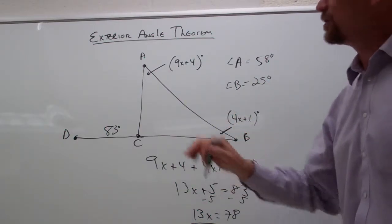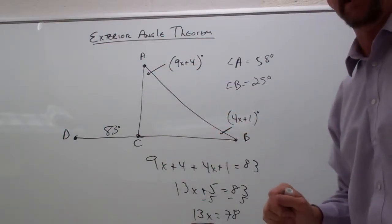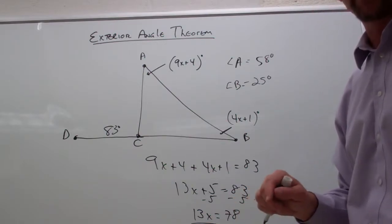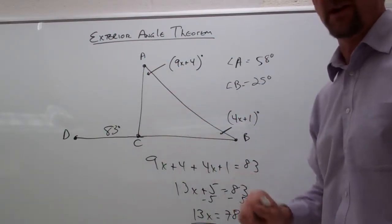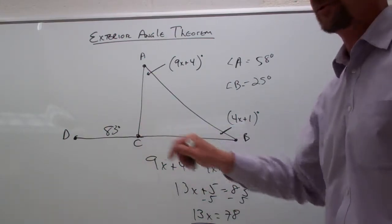So now we've used the exterior angle theorem to find the measures of angle A and angle B. And if we want to take it one step further, we can use the triangle sum theorem, which states that the sum of the three angles in a triangle is always 180 degrees, to find the measure of angle C.